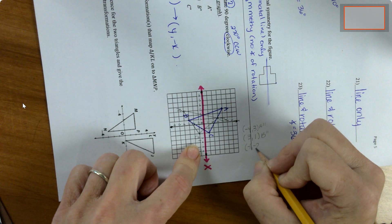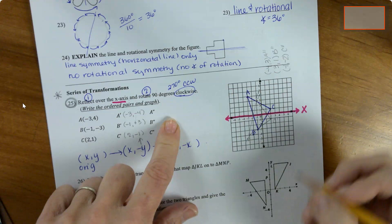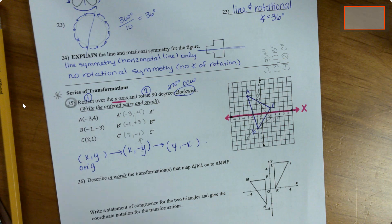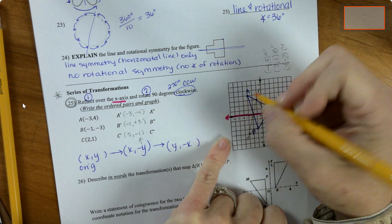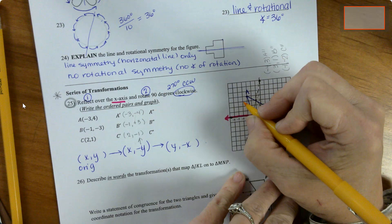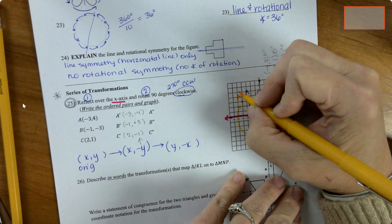But then I know exactly where to go on my graph. So I've got negative 4, positive 3. This one rotates up here, this is A double prime. And then 3, 1 is B double prime. And negative 1, negative 2, that one there is C double prime.